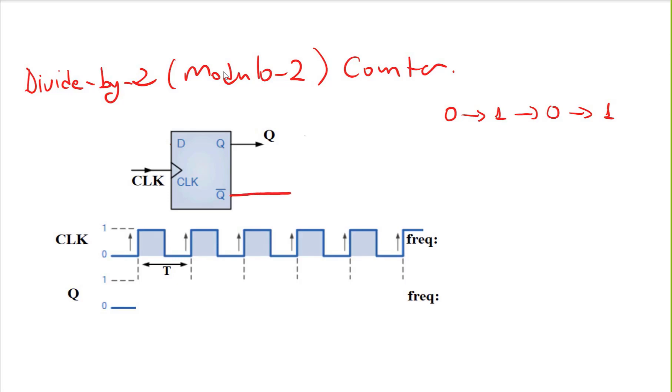For this, we will get this Q0 output and connect it back to the D input to achieve this behavior. Let's say initially Q is 0 and Q0 is 1. At this clock edge I will be capturing a 1 here, and this one will go to the Q output, so Q will become 1. This will now become 1 and Q0 will become 0.